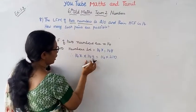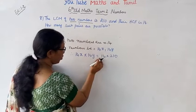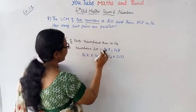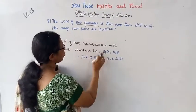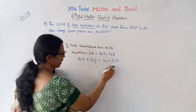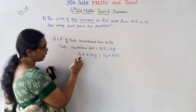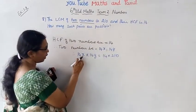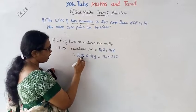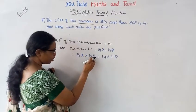Then, 14x multiplied by 14y equals HCF multiplied by LCM, which is 14 multiplied by 210. This gives us the multiplication relationship: 14x into 14y.